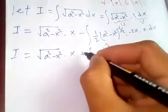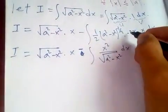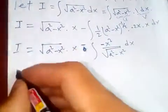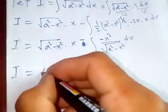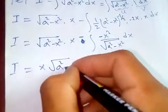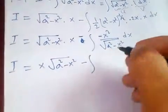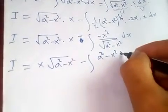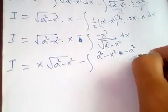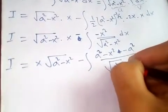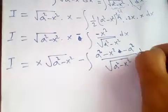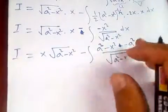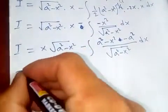Now, keeping the negative sign carefully, we rewrite: I = x√(a² - x²) minus the integral of (a² - x²) / √(a² - x²) dx, plus... wait, let me correct the sign — minus the integral of (a² - x² - a²) / √(a² - x²) dx.